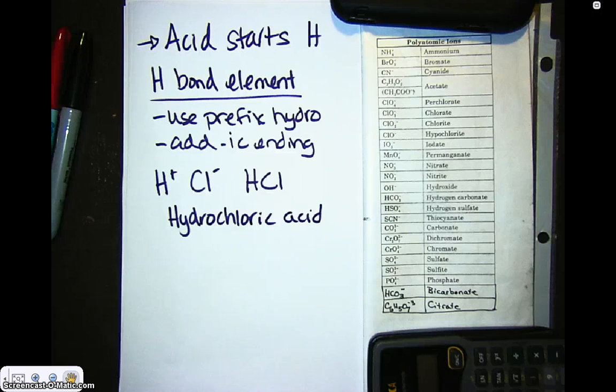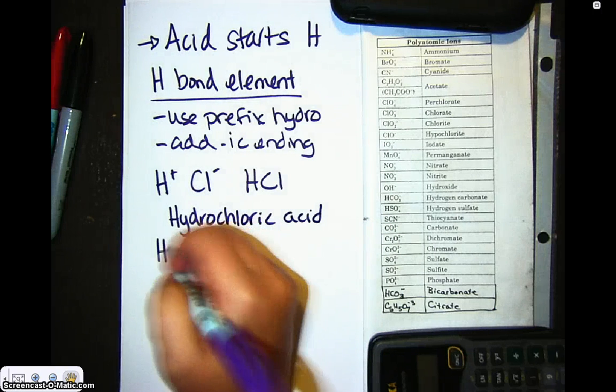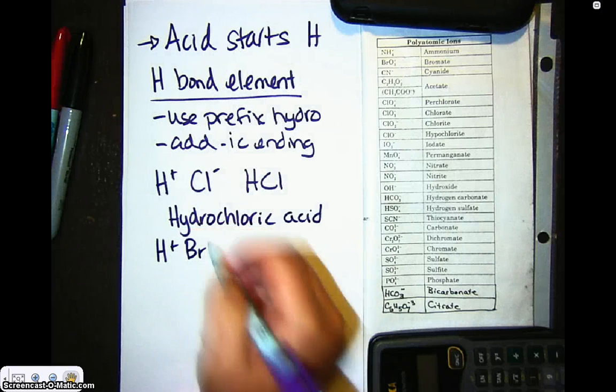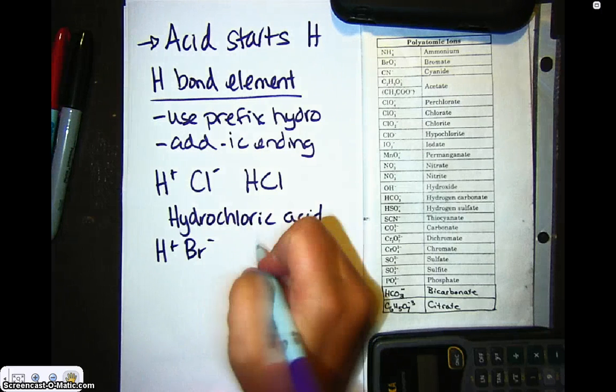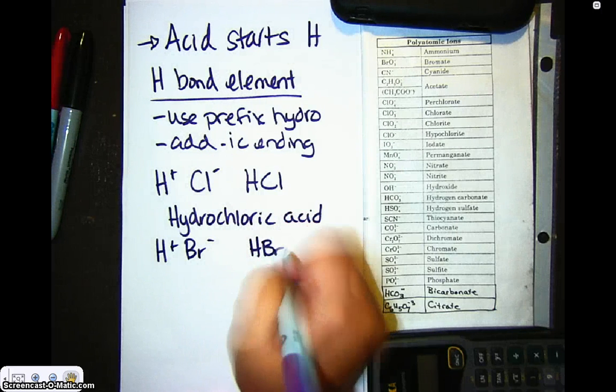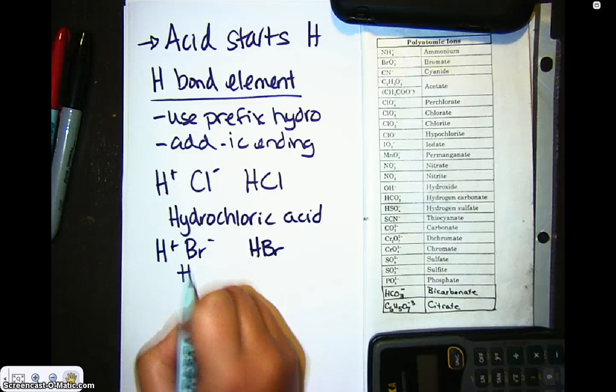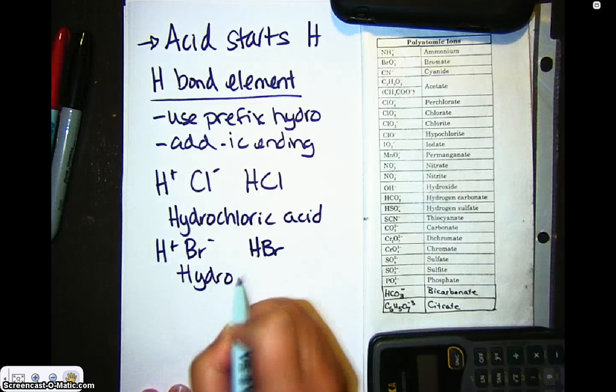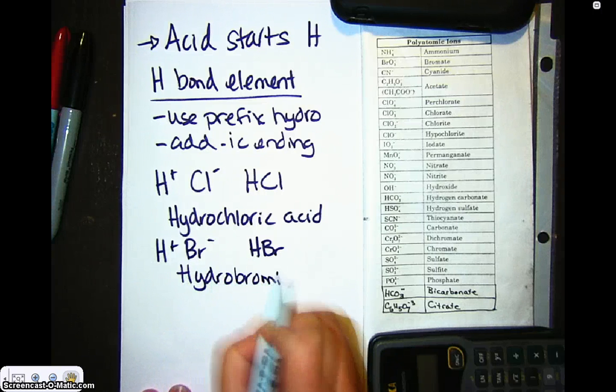Now if I have hydrogen with bromine, again bromine is a minus one, so I have HBr. This is going to be hydrobromic acid.